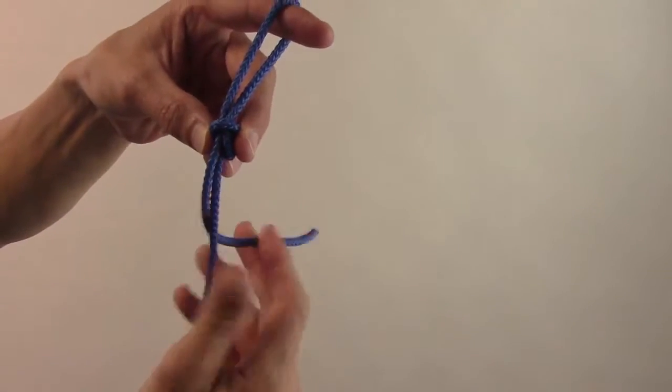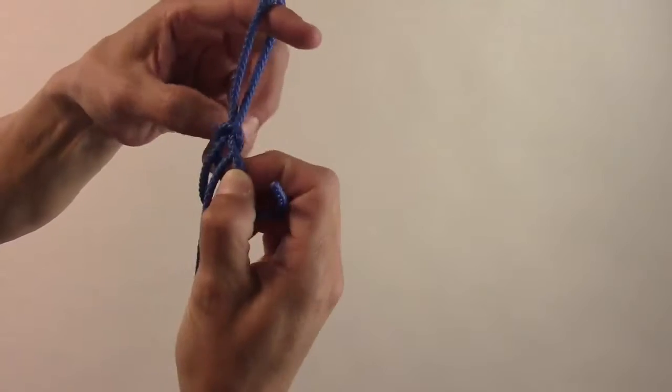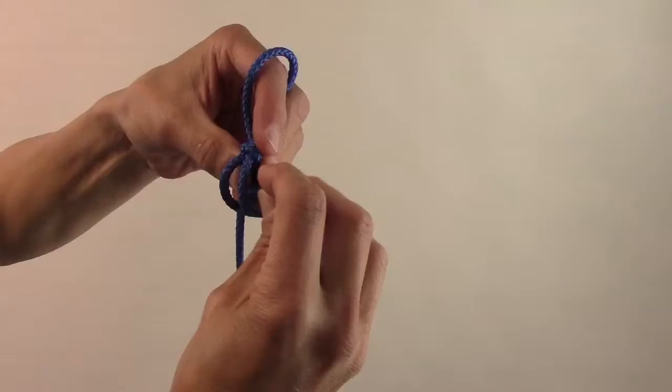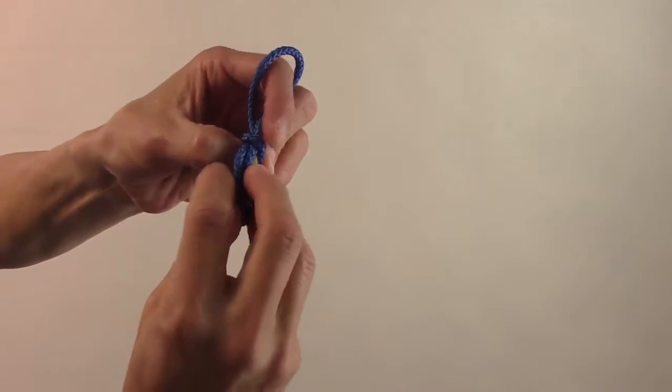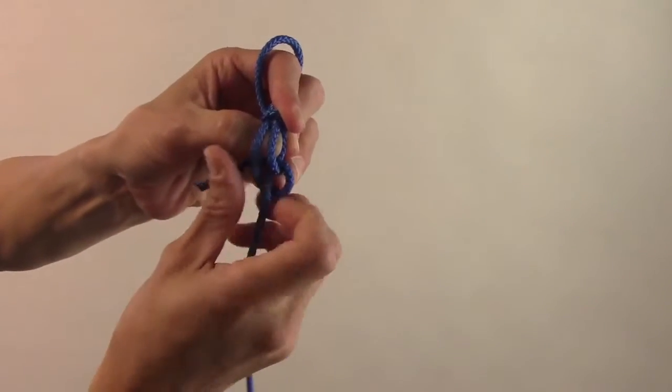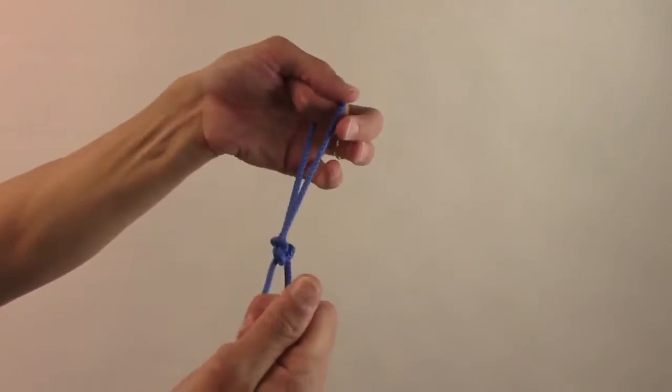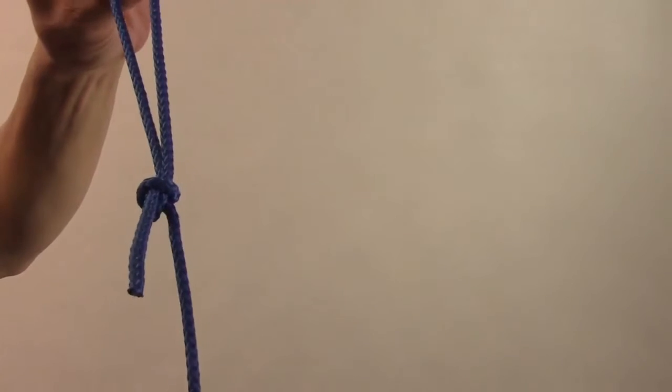So we're just going to go around the back, underneath this one, and underneath the next one. Tighten it all down, and you have the angler's loop. Thank you.